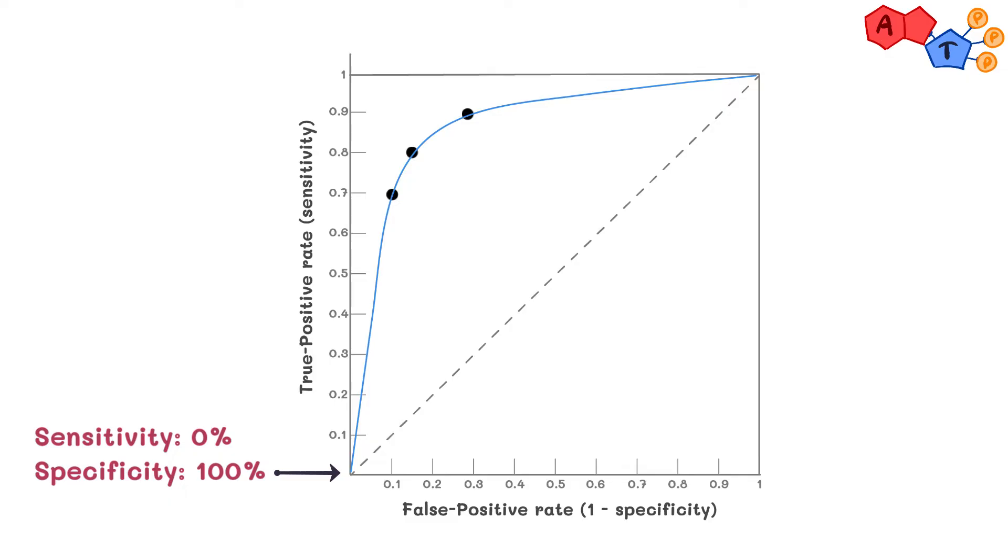On the other end of the spectrum, the top right corner suggests a sensitivity of 100% and a specificity of 0%. This would be like having a very low cutoff. Sure, you wouldn't get any false negatives, but this isn't all that practical either.